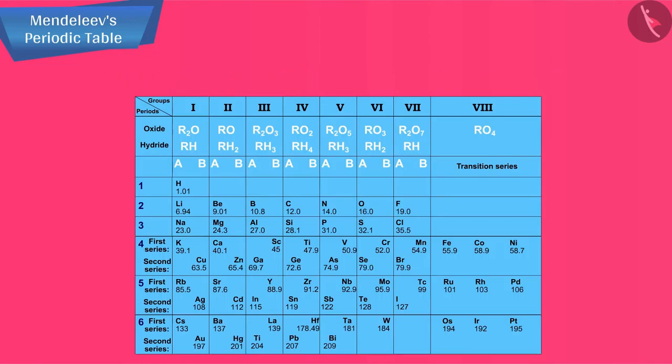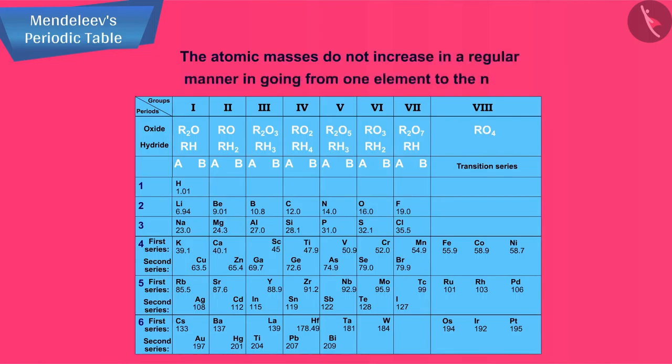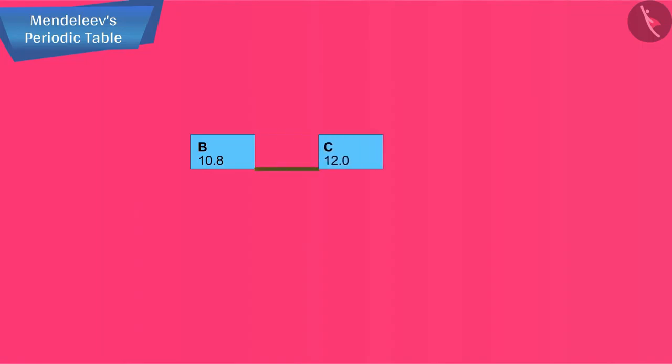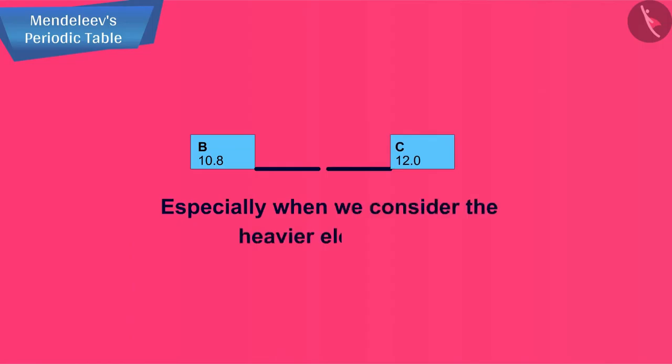Another problem was that the atomic masses do not increase in a regular manner in going from one element to the next. So it was not possible to predict how many elements could be discovered between two elements, especially when we consider the heavier elements.